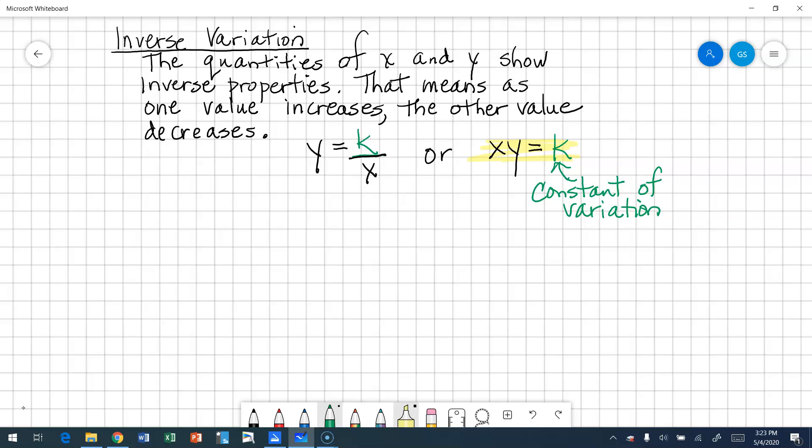So this is called an inverse variation. The graph of an inverse variation is kind of a funky thing. It has a special name. And that special name is a hyperbola. I'm going to graph an inverse variation. I have y is equal to k over x, where k is positive.